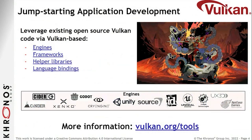For people that are just trying to get going quickly, rather than learning how to do this all from scratch, there's a ton of resources out there. The engines, framework libraries, helper libraries — it's all kinds of language bindings for all your favorite languages. These can all again be found on vulkan.org/tools as well. You can see a bunch of engines listed there, and there's more all the time, which is great. We try to keep that list up to date on our website.